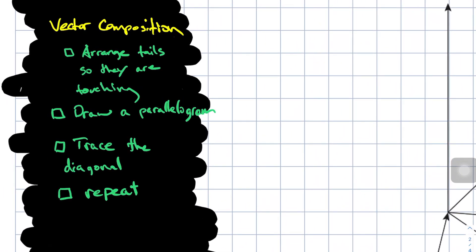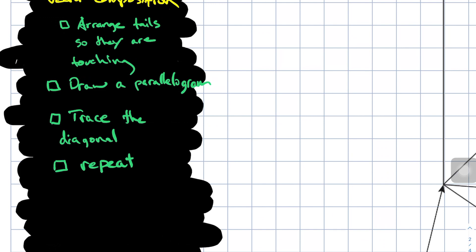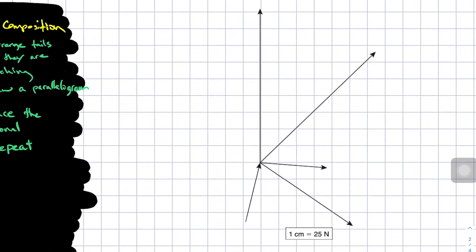We can arrange the tails of two vectors so that they are touching and this is for the parallelogram method. Then we can draw a parallelogram, then trace the diagonal and then repeat that process. And I didn't write out the steps for the chain method but I'll show them to you. It's pretty easy.